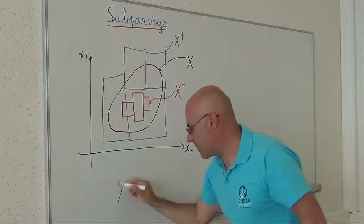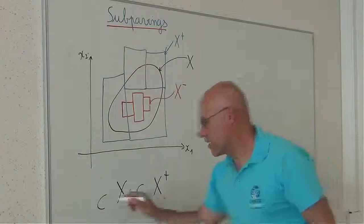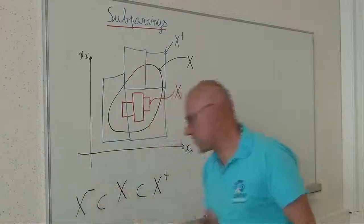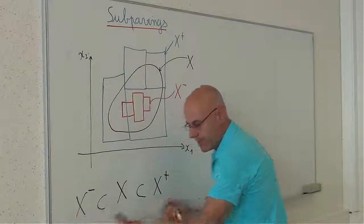We have x minus included in x included in x plus. We say that we have bracketed x by two subpavings.